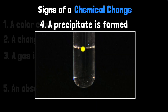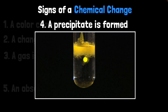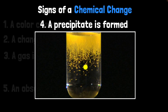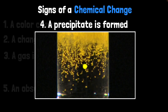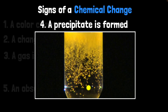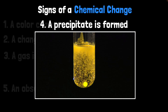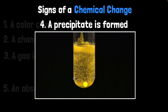Sometimes when you mix two liquids, you get a solid — solid crystals. If you zoom in, you can see solid crystals being formed when mixing liquids. This is what we call a precipitate: it settles down. So a new substance sometimes precipitates out.